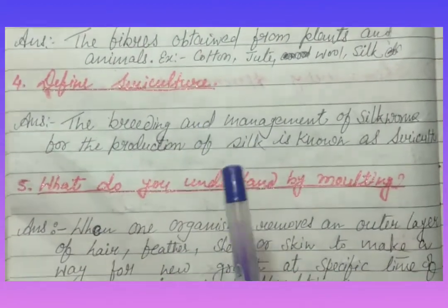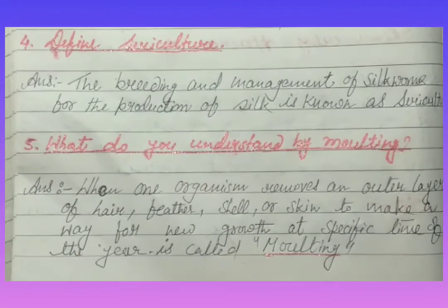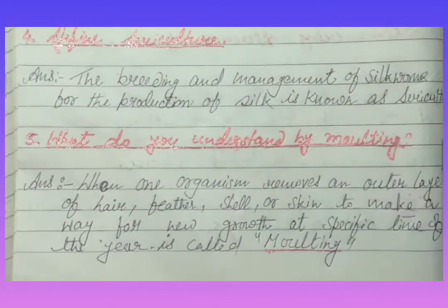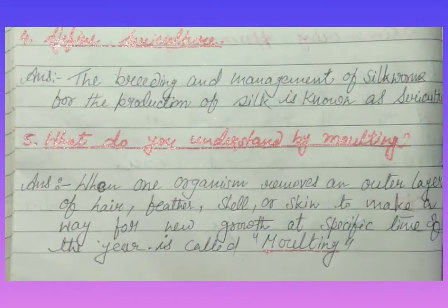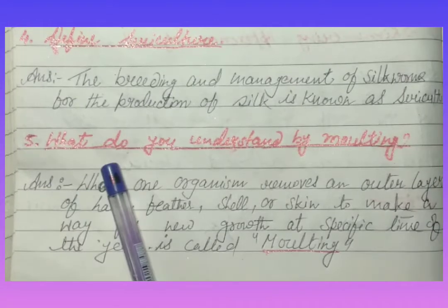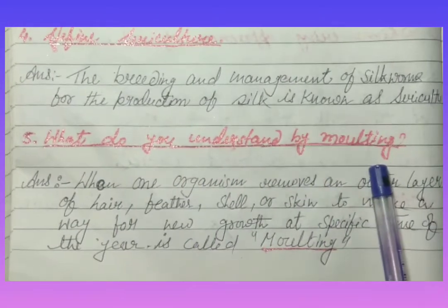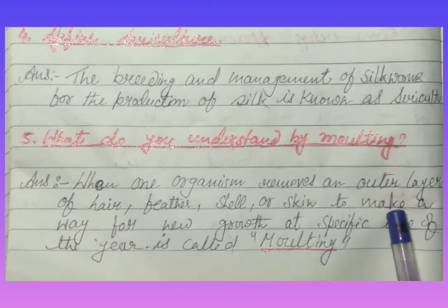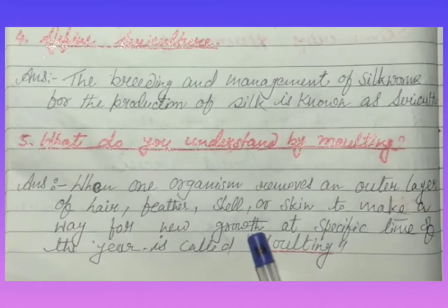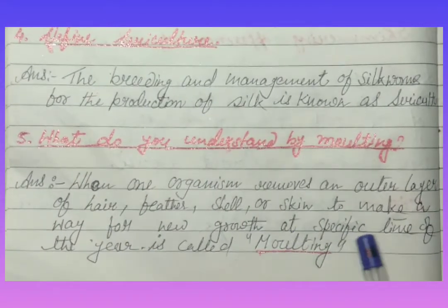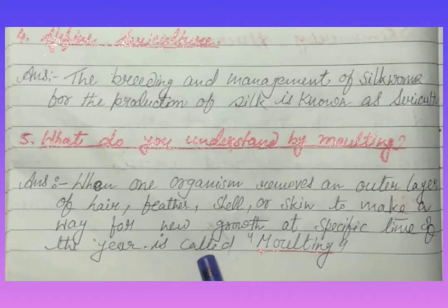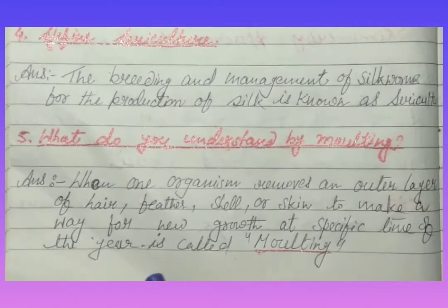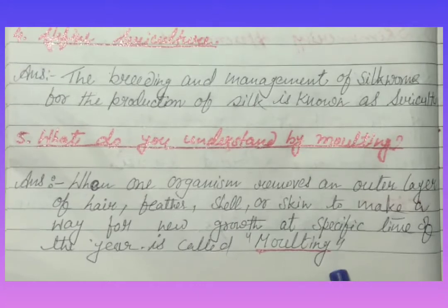Define sericulture: the breeding and management of silkworms for the production of silk is known as sericulture. What do you understand by molting? When an organism removes an outer layer of hair, feathers, shell, or skin to make way for new growth at a specific time of the year, it is called molting.